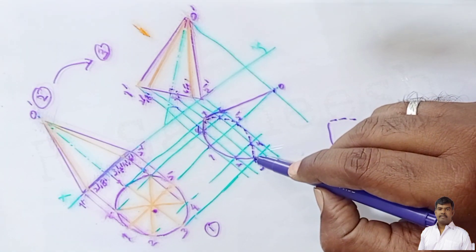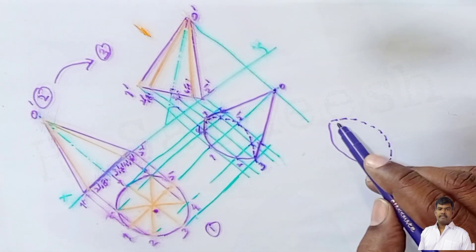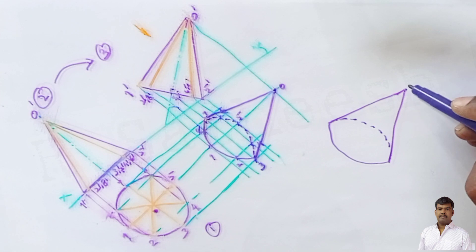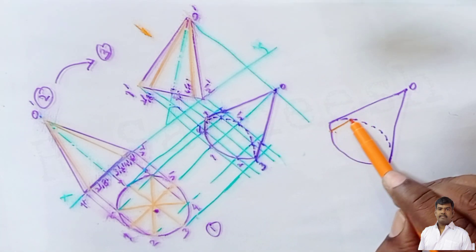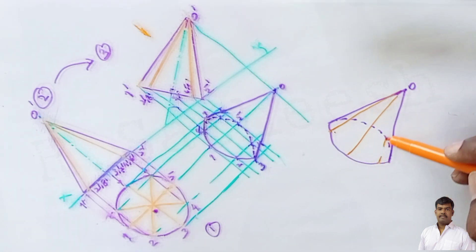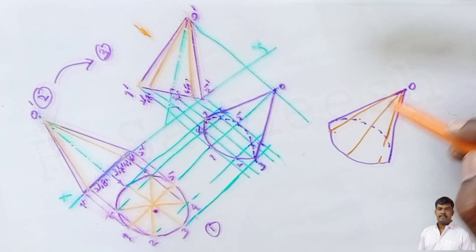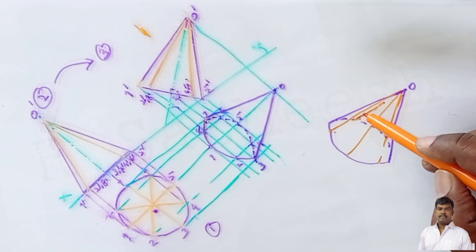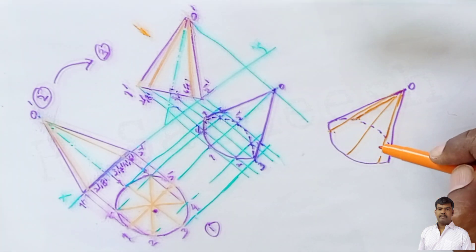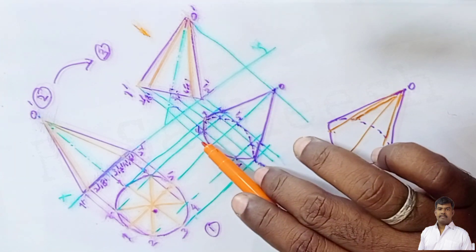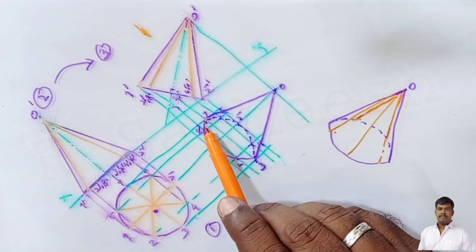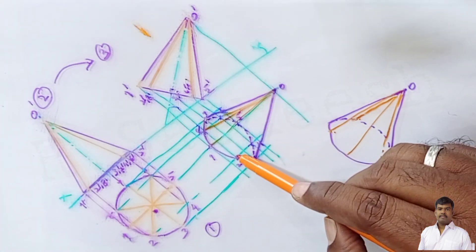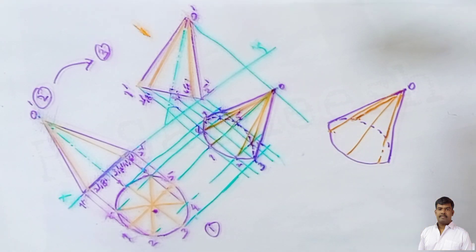Join the extreme generators to the apex O. The extreme generators are joined to O. Join points 8, 1, 2, 4, and 6 to the apex. Point 5 overlaps with 1. Generators are imaginary lines, so only the boundary extreme generators are visible — the remaining generators are imaginary and are drawn thin using a 2H pencil. This is the complete solution for the given problem.